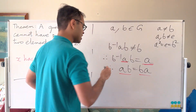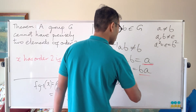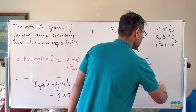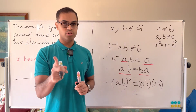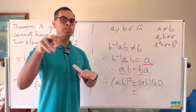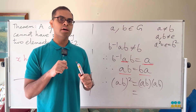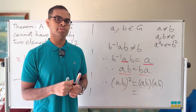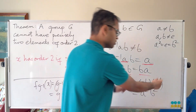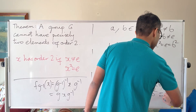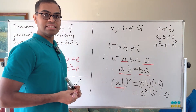Now we can show that ab has order 2. Write (ab)² = ab · ab. Using associativity and the fact that a and b commute, we can swap b and a to get a²b². Since a² = e and b² = e, we get e · e = e. So ab has order 2. This is specific to this proof — if a and b don't commute, their product need not have order 2.